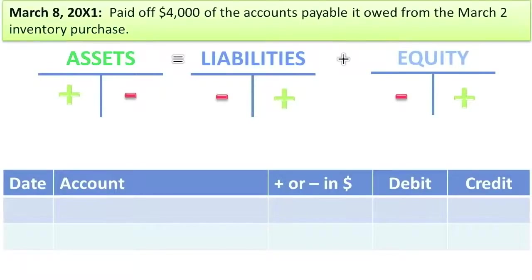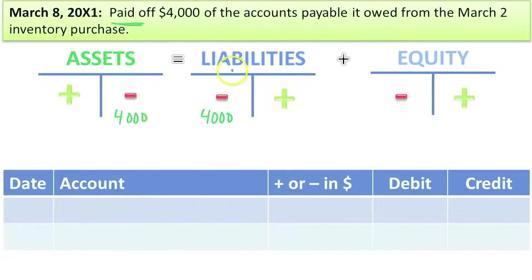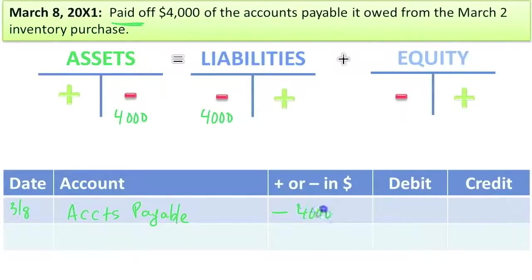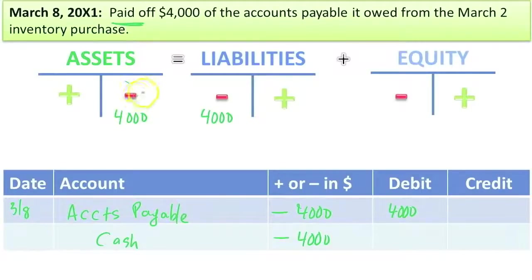Paid off $4,000 of the accounts payable owed. When you hear 'paid off,' that means cash was used. We got rid of some assets called cash — $4,000 — and we paid off accounts payable, so our accounts payable are going down $4,000. Assets went down and liabilities went down. Let's record the entry: accounts payable decreased by $4,000 — a decrease in a liability is a debit. And a decrease in the asset cash is a credit of $4,000. Debits equal credits, and the decrease on the asset side equals the decrease on the liability and equity side. We stay in balance.